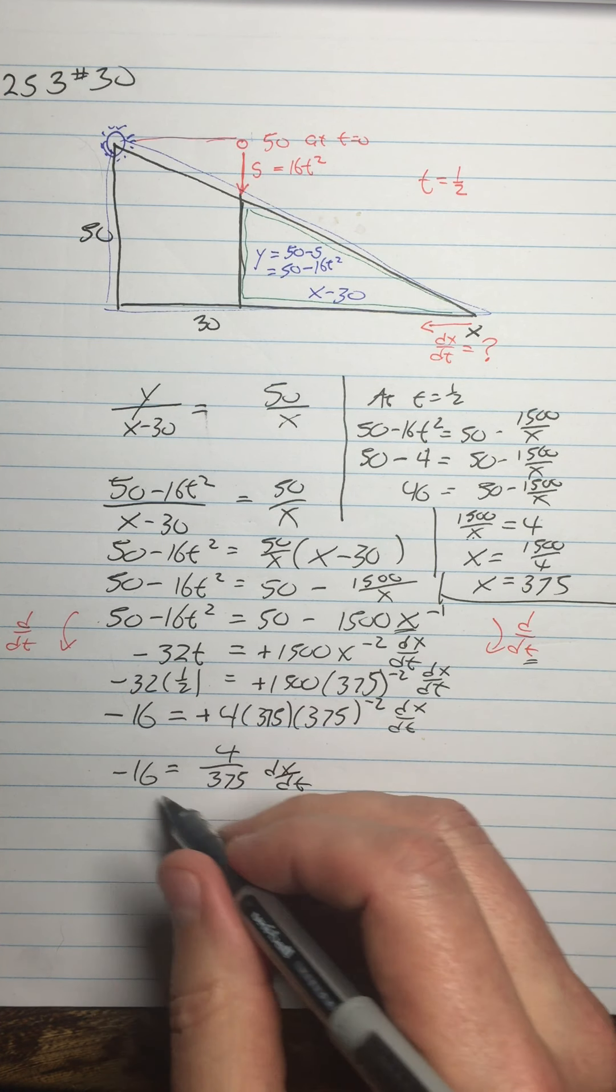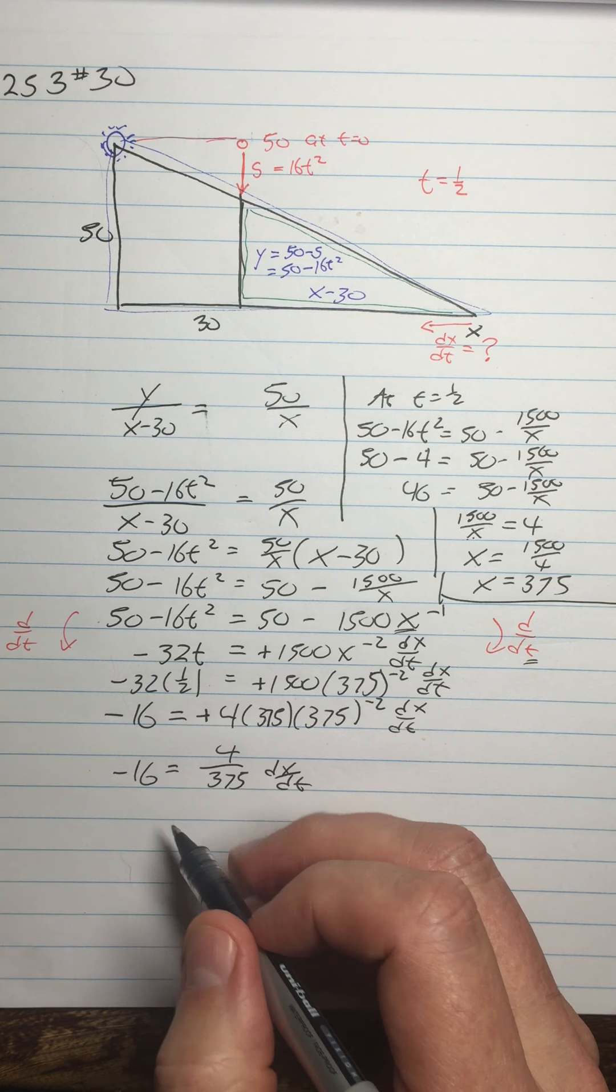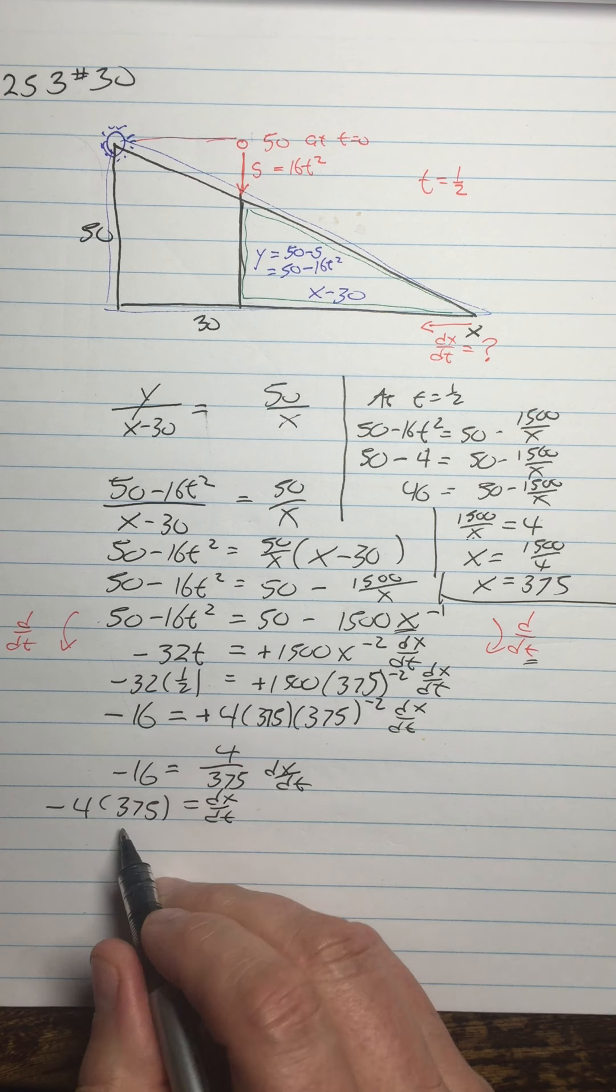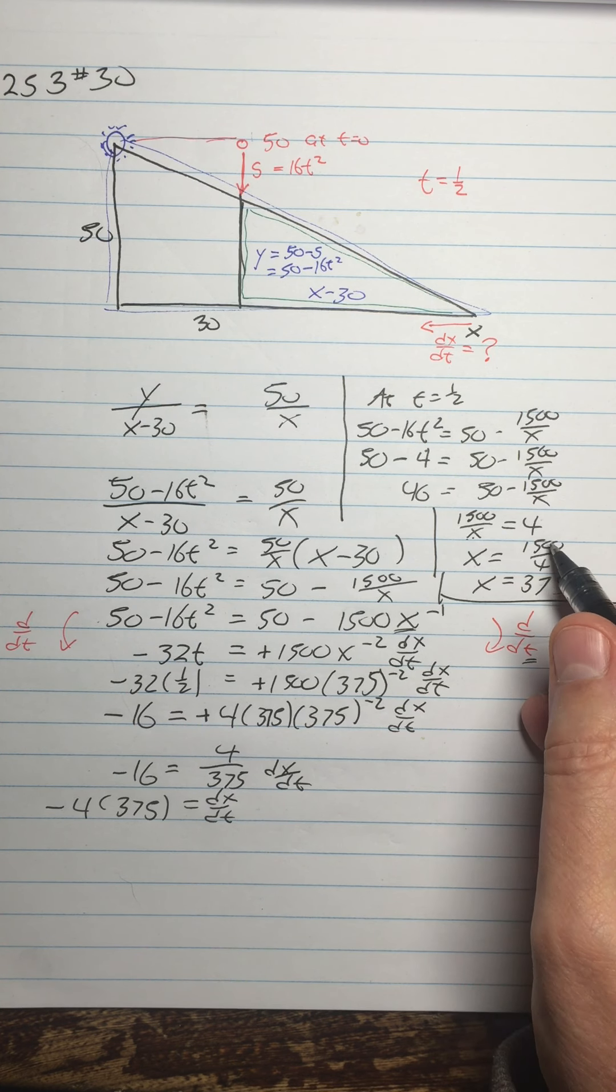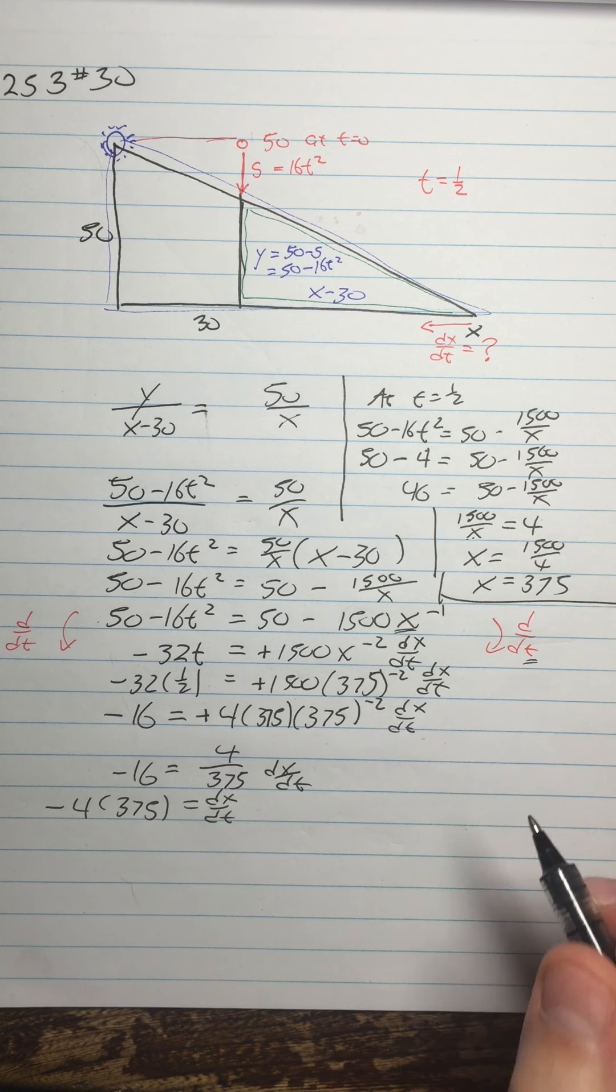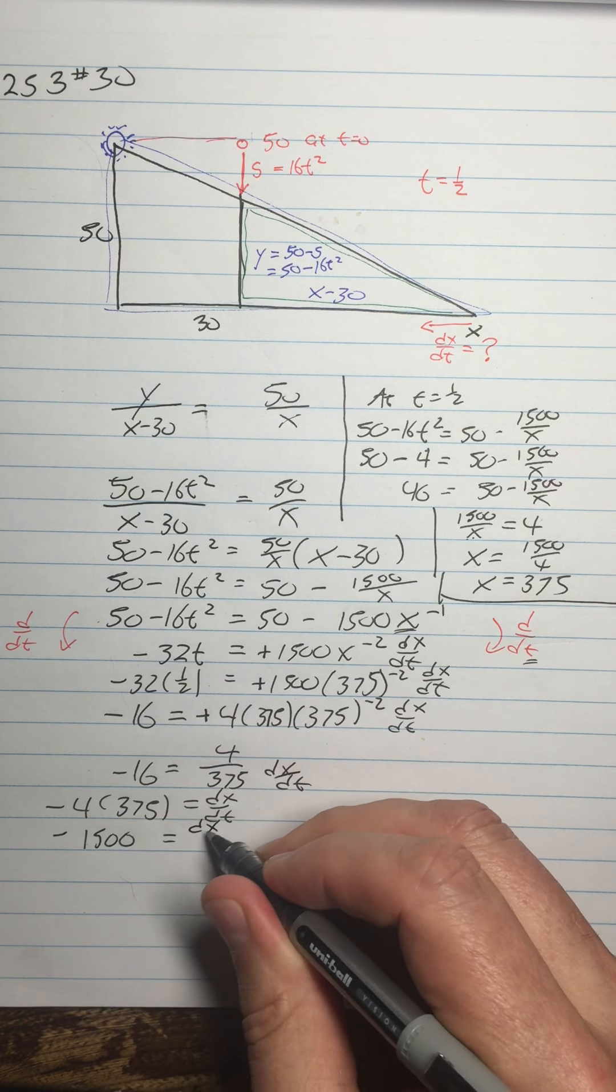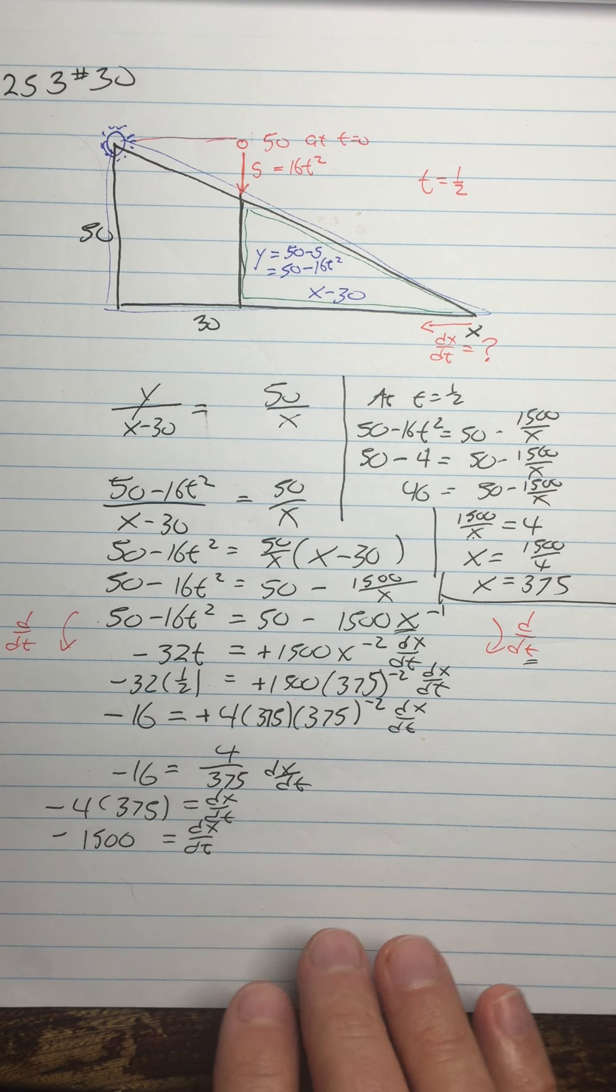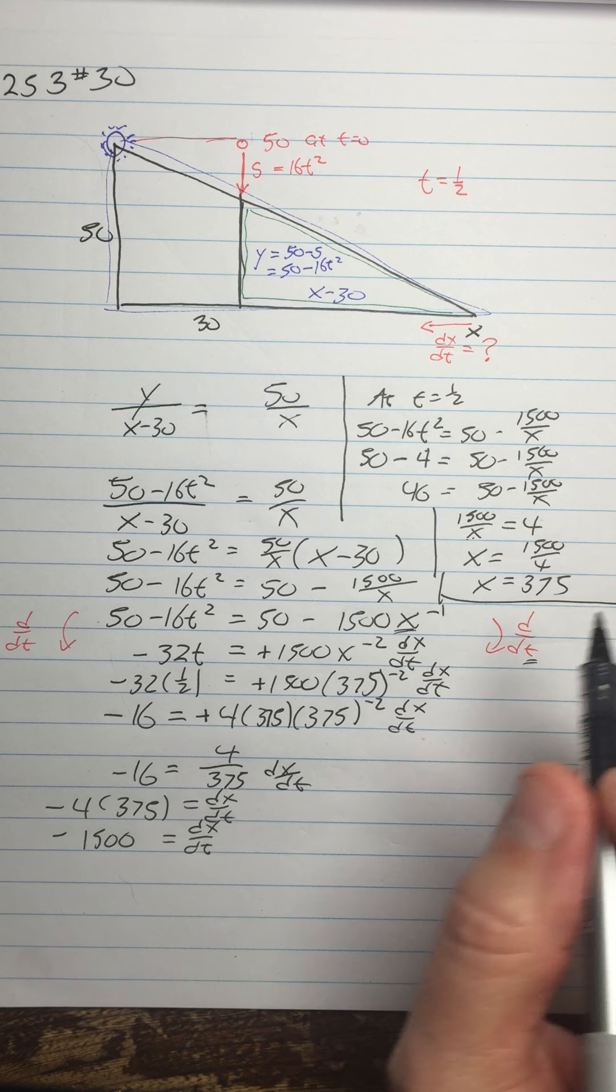And then I already knew what 4 times 375 was. So I had that here. By the way, how did I know 1500 divided by 4 was 375? Did I use a calculator? No. I said half of 1500 is 750 and half of that is 375. I didn't use a calculator for any of this. I'm not saying that to show off. I'm saying that to say there are mental math techniques that will make you faster than a calculator. And also enable you to solve problems without a calculator. So I get my dx dt equals negative 1500. So there are a couple of things in terms of the numbers that are surprising here. Like the x equals 375 when I first got that. I was sort of hesitating. I was like, how is the x equal to 375?